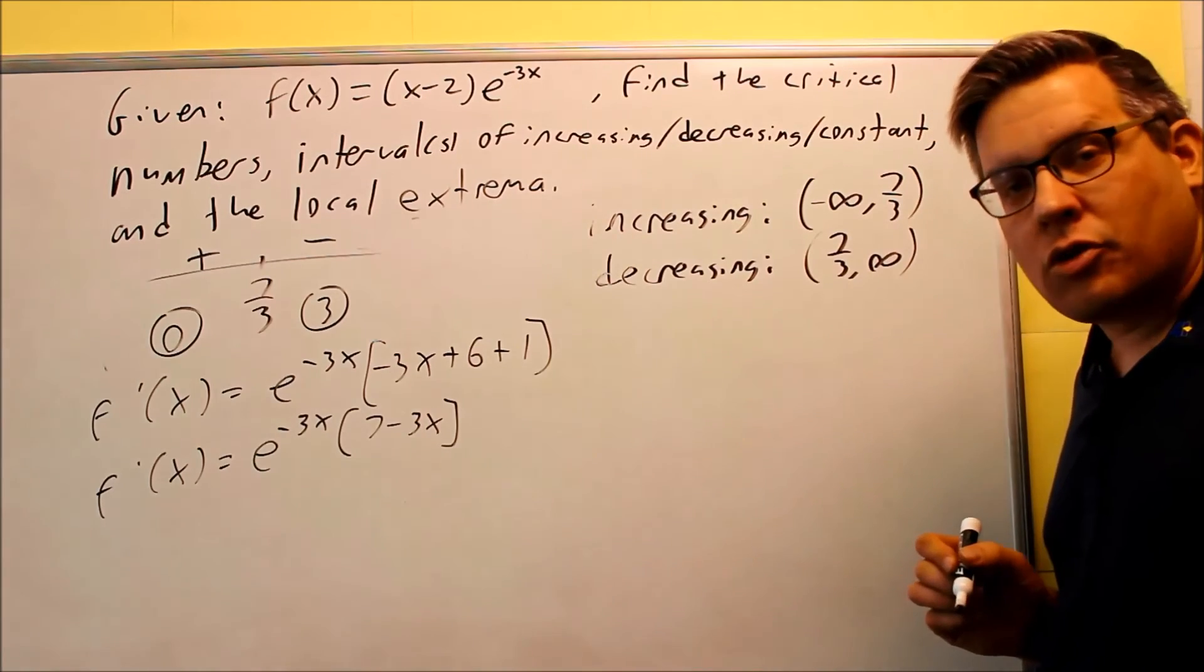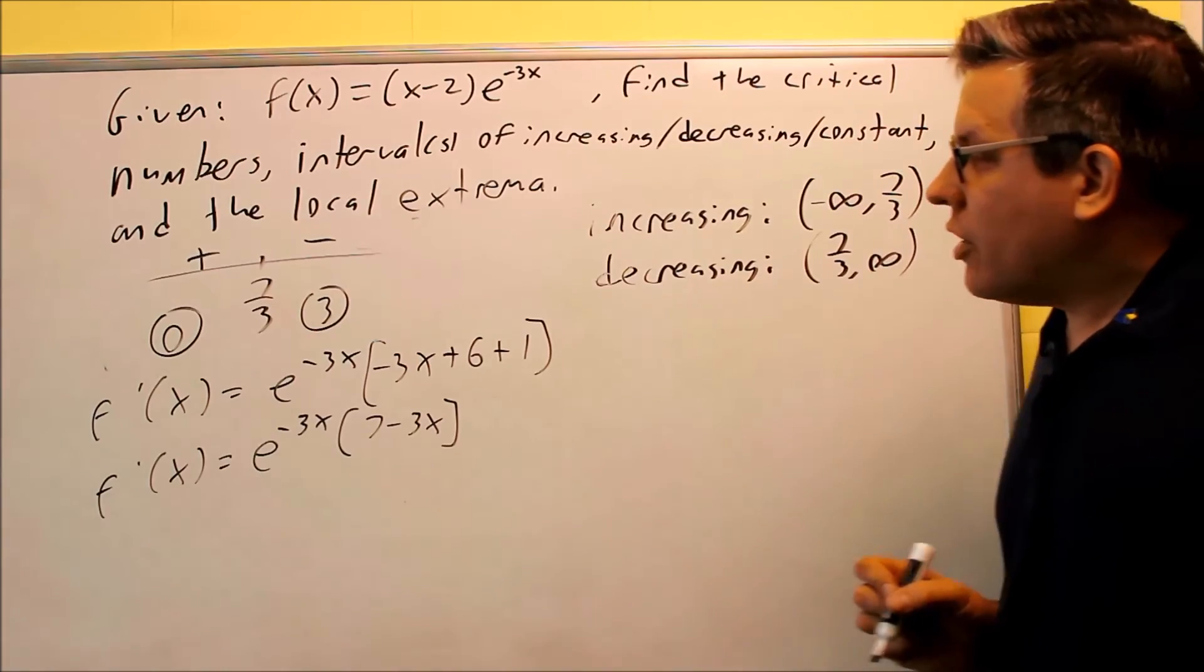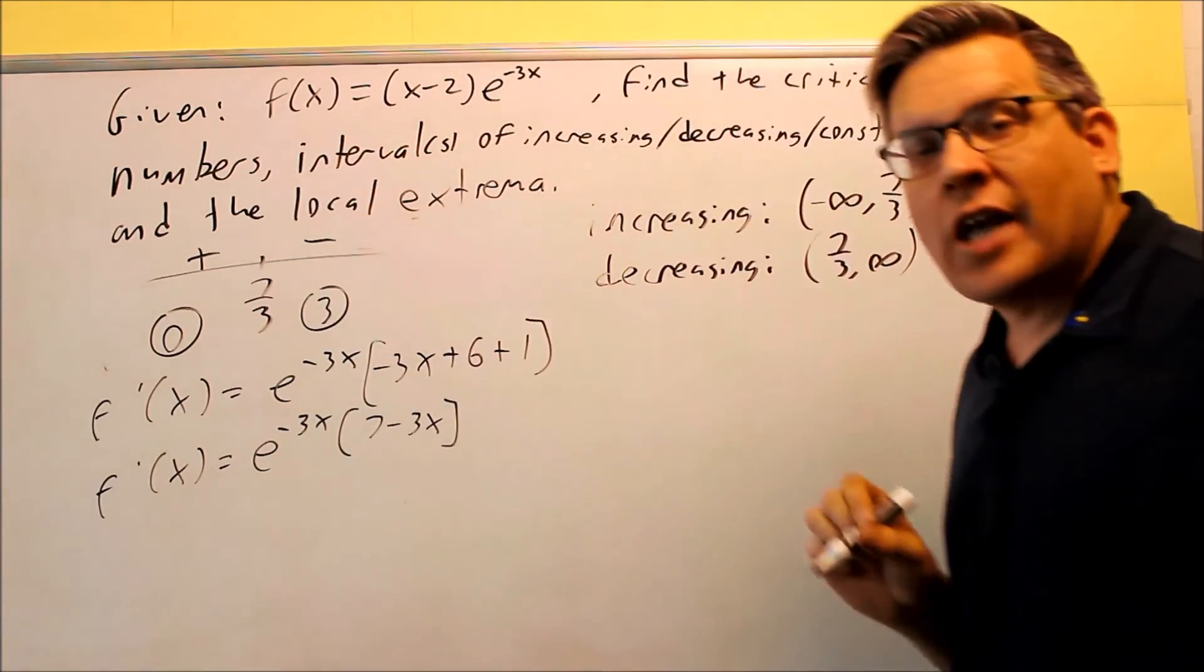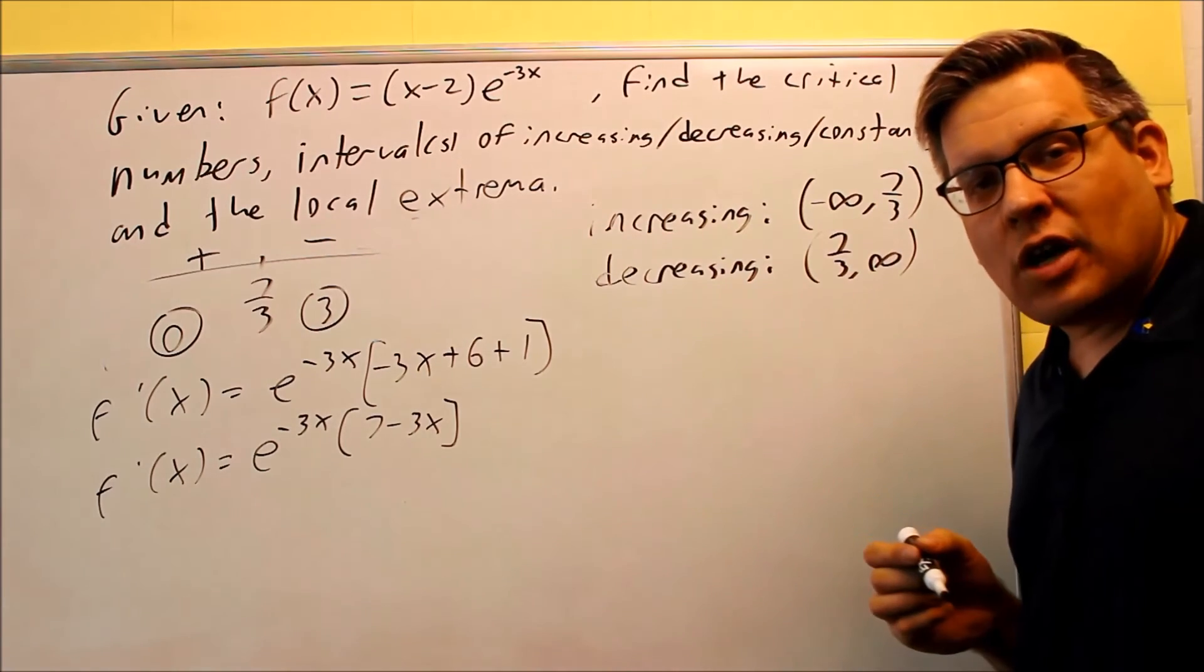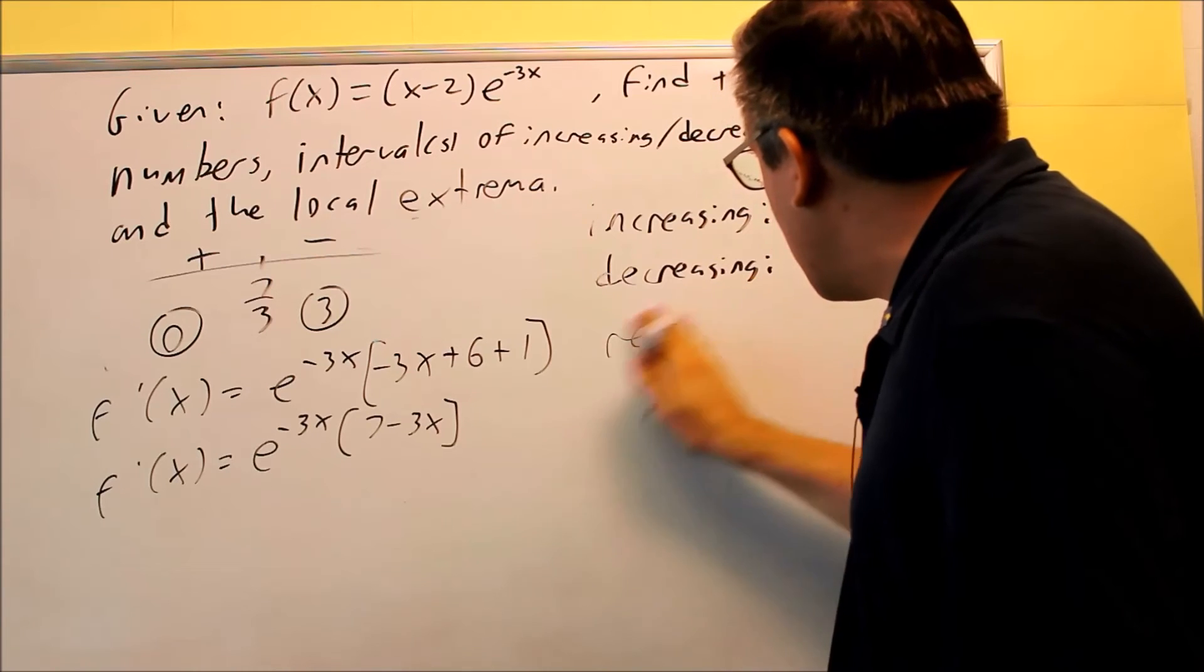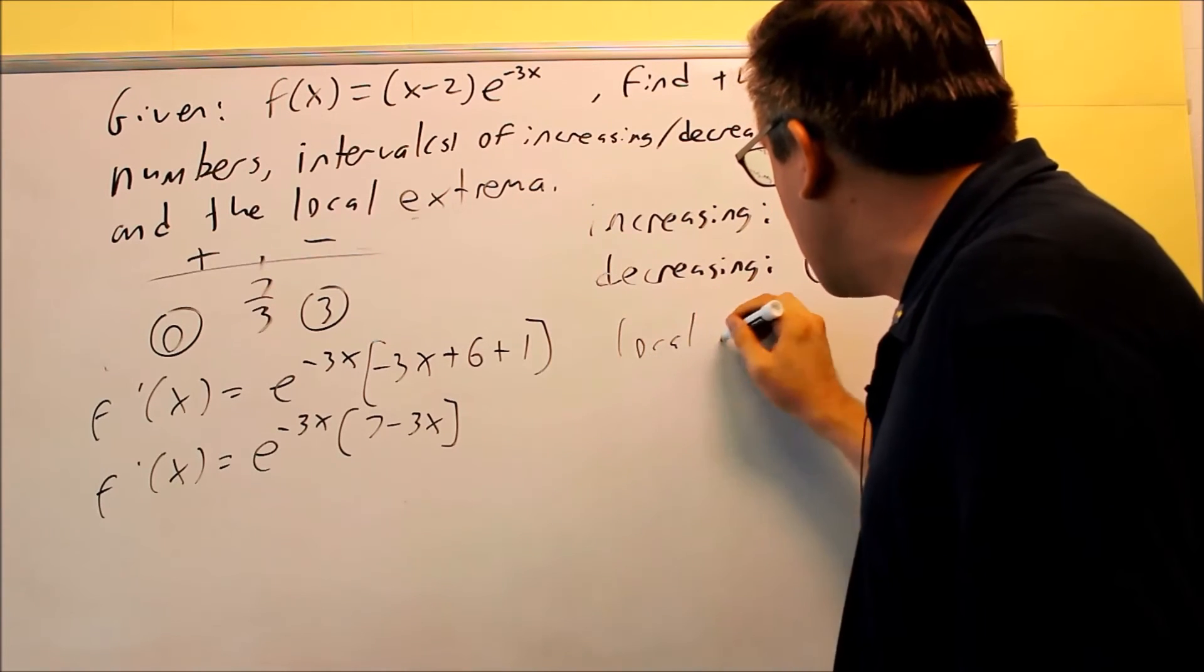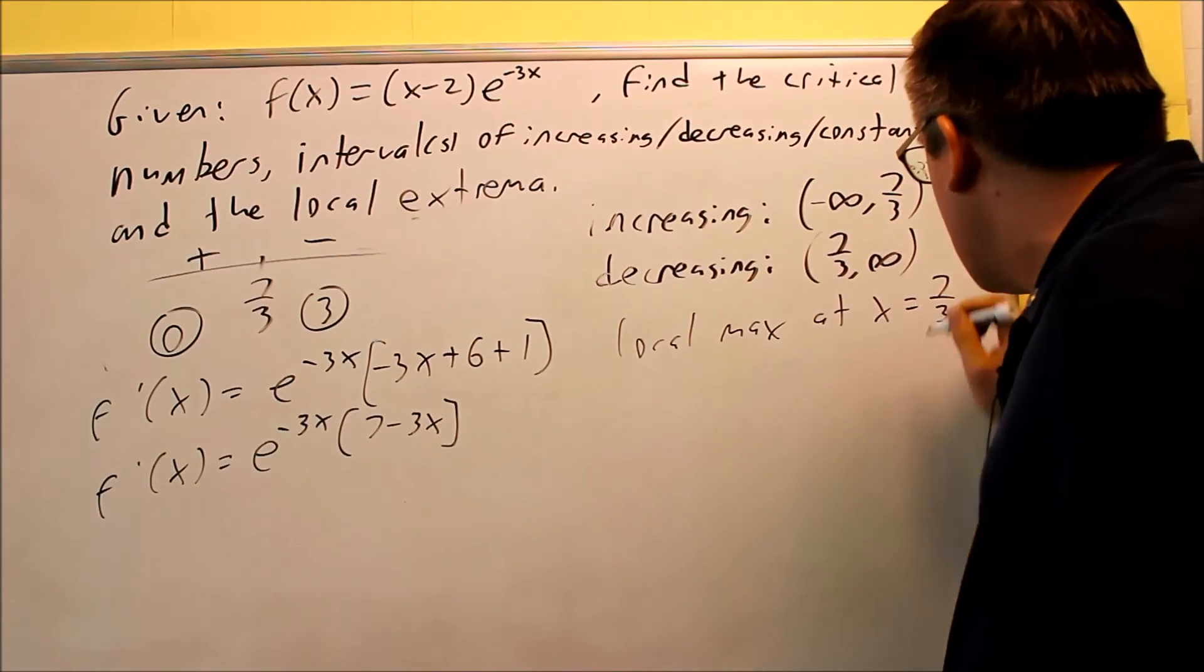Next we want to find our local extrema. From our chart right here, we only have a positive and we have a negative. So if it goes plus to minus, we'll use our first derivative test and that tells us that you're going to have a relative max. So local max at x is equal to 7 thirds.